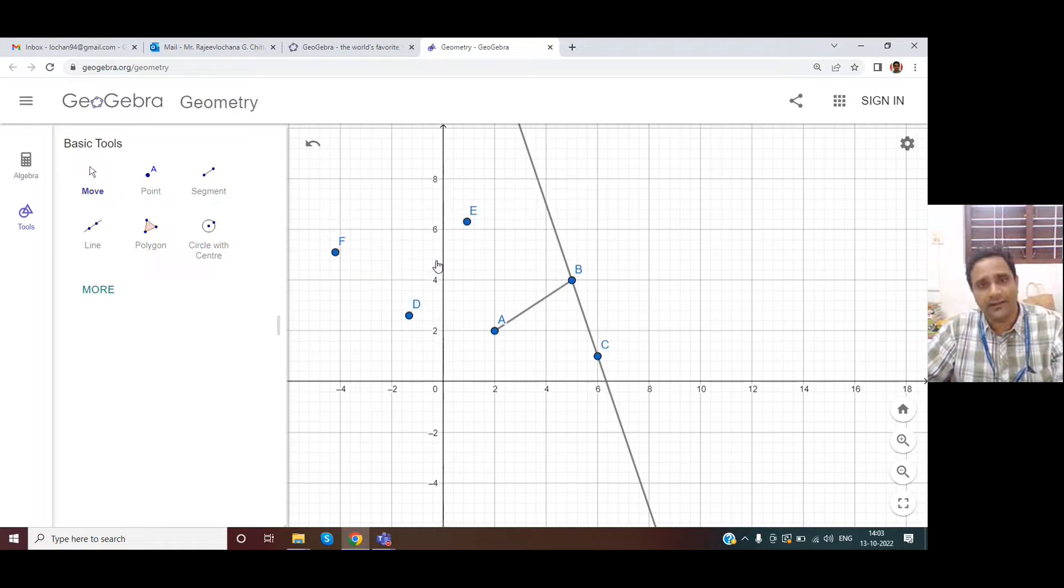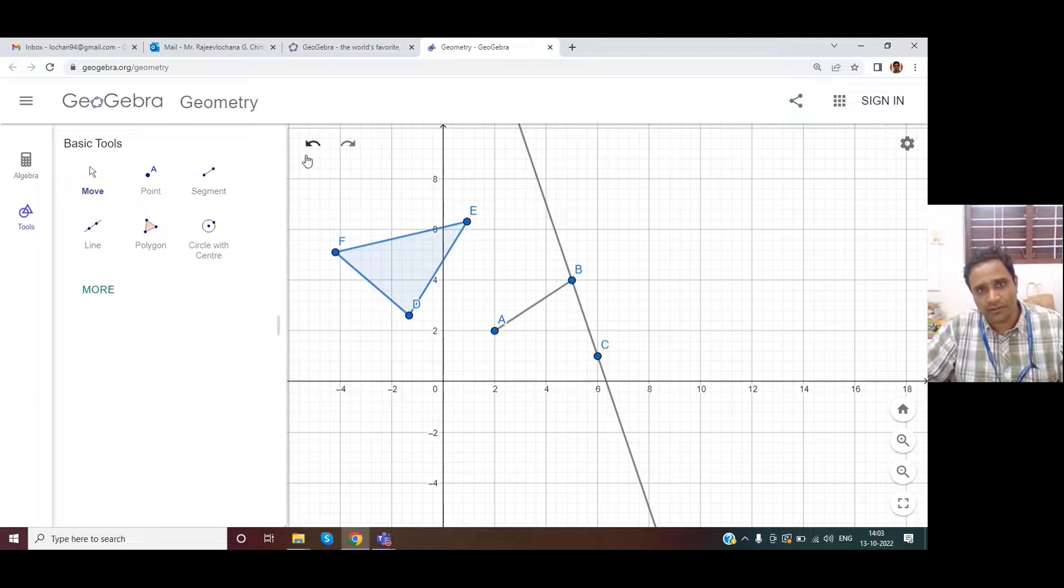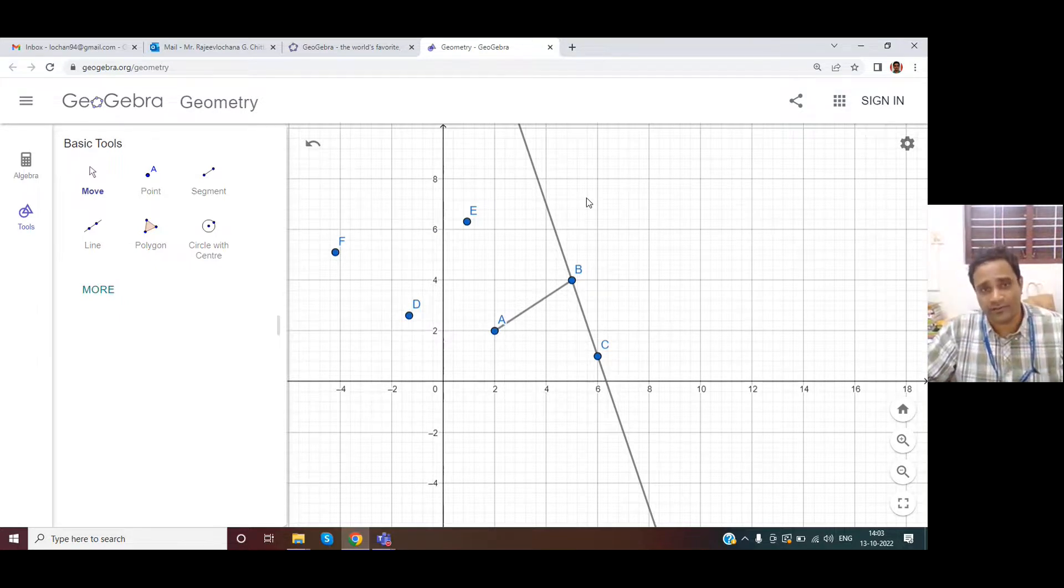If you delete, what did I do? I just selected one and hit the delete button, so all three were in the same polygon. So that is the difference between a line, a segment, and a polygon.